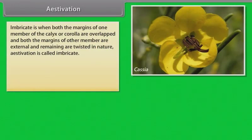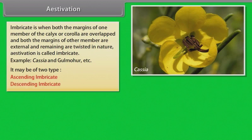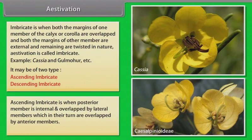Imbricate is when both the margins of one member of calyx or corolla are overlapped, and both the margins of another member are external, and the remaining are twisted. Estivation is called imbricate. Example: Cassia, Gulmohar. It may be of two types: ascending imbricate and descending imbricate. In ascending imbricate, the posterior member is internal and overlapped by lateral members, which in turn are overlapped by anterior members. Example: Caesalpinia pinnata.